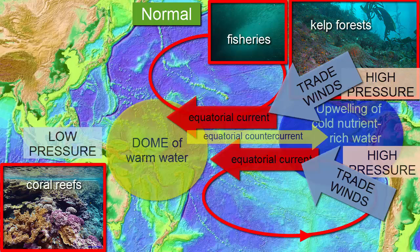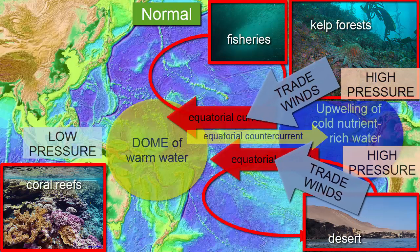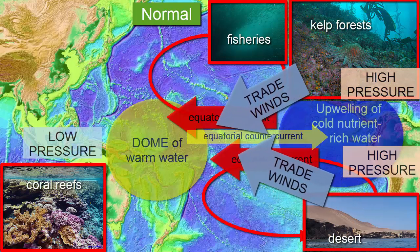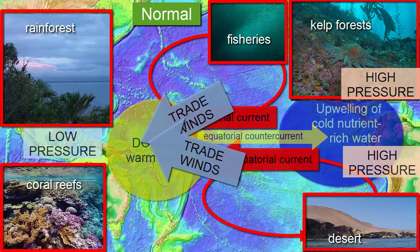The high pressure air system that drives the trade winds sits over the eastern equatorial Pacific, and with the low water content of this high pressure air, the coastlines of northern Peru and Ecuador and Central America are deserts. During their journey across the Pacific, these same trade winds pick up lots of moisture, and by the time they reach the islands and continents in the west, these air masses are warm and wet. They collide with the rainforests of Indonesia and northern Australia and dump their water there.